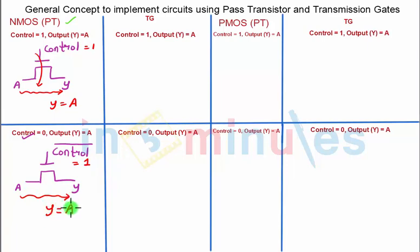What we need to understand is we get Y equal to A when control bar is 1, or in other words when control is equal to 0. This is how we implement any expression or circuit using NMOS pass transistors if you remember this thumb rule. Let's quickly do the similar exercise for PMOS transistors.